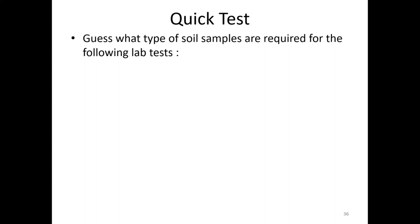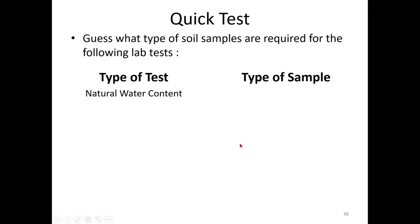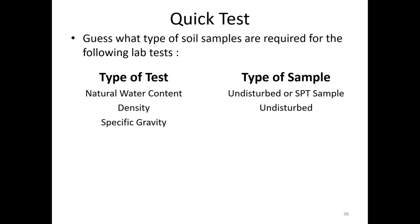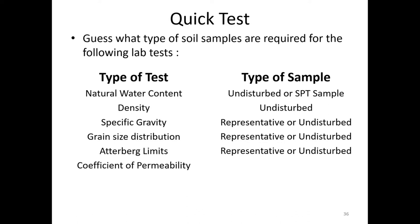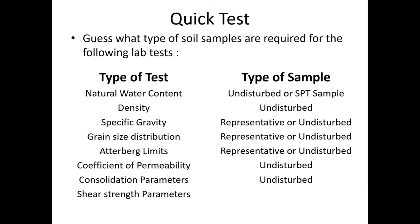Let us have a quick test: what types of soil samples are required for the following lab tests? Natural water content — undisturbed or SPT sample. Density of the soil — undisturbed. Specific gravity — representative or undisturbed. Grain size distribution — undisturbed or representative. Atterberg limits — representative or undisturbed. Coefficient of permeability — undisturbed only. Consolidation — undisturbed only. Shear strength — undisturbed only.